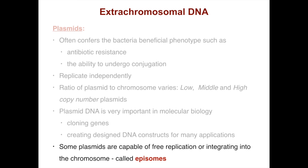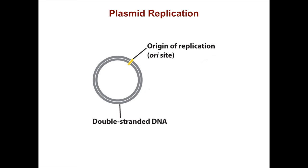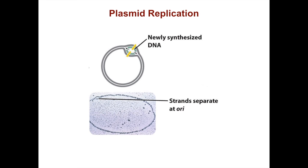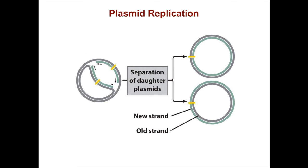Some plasmids are capable of free replication or integrating into the chromosome — these are called epizomes. Plasmids replicate as follows: the plasmid is circular double-stranded DNA with an origin of replication, marked here in yellow. Replication begins at this Ori site and new DNA is synthesized, as shown in this electron micrograph of a bacterial plasmid. As synthesis continues, you eventually get separation of the daughter plasmids, each containing one new strand and one old strand.